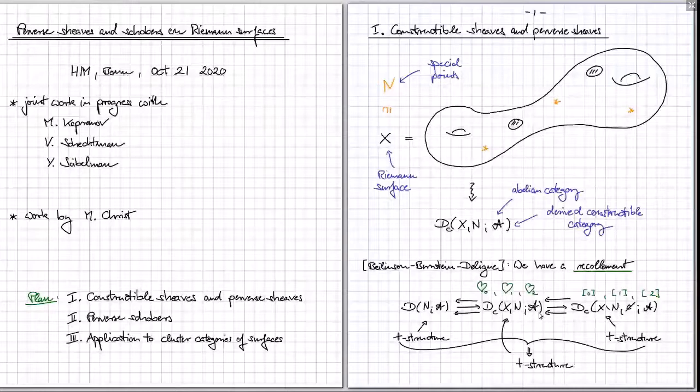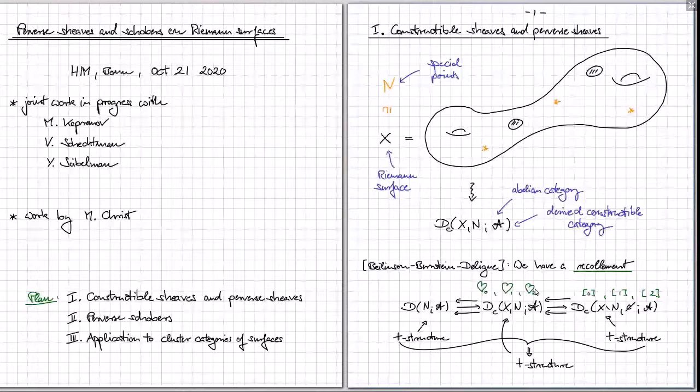These are three abelian categories sitting inside this derived constructible category. The first thing we want to understand is how to describe these abelian categories as concretely as possible. If t-structures don't mean much to you, don't worry — we're going to give an independent description. The category we care most about is the middle piece, which is what is called the category of perverse sheaves.